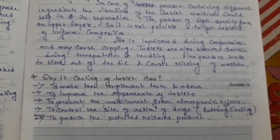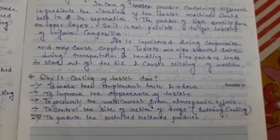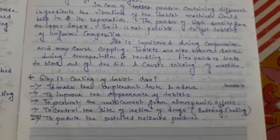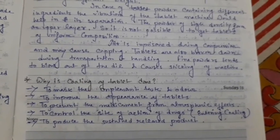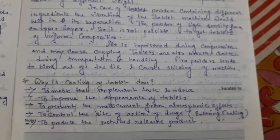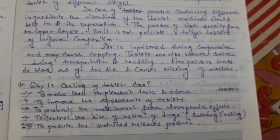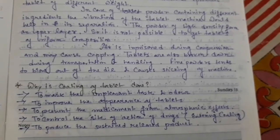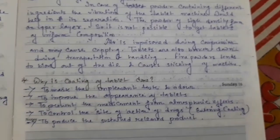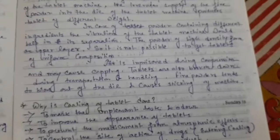Why is coating of tablets done? To mask the unpleasant taste and odor, to improve the appearance of tablets, to prevent the medicament from atmospheric effects, to control the site of action of drugs, and to produce sustained release products.